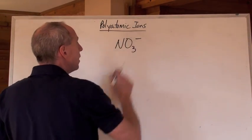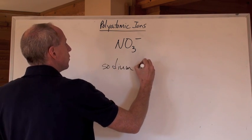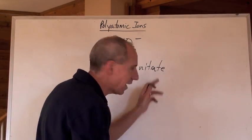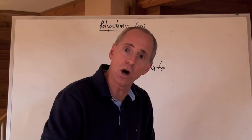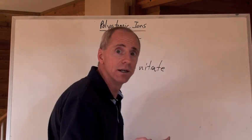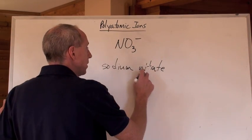Now, NO3 negative is nitrate. So if I said to you, here's a compound I want you to make. It's called sodium nitrate. You look at that and you say, well, that's not nitride, and it's not nitrite. It's nitrate. So it's on a polyatomic chart. Ides are just normal elements. So here, sodium nitrate.